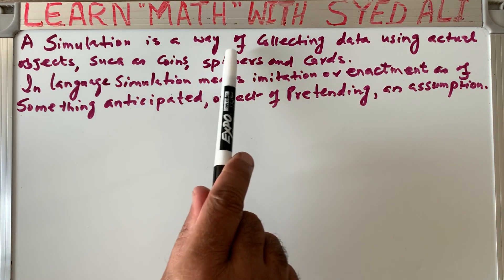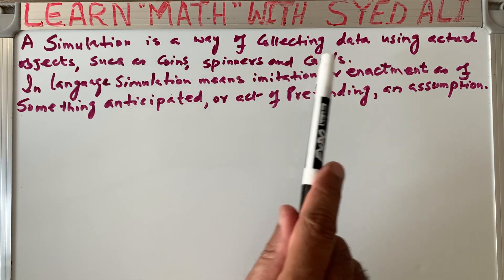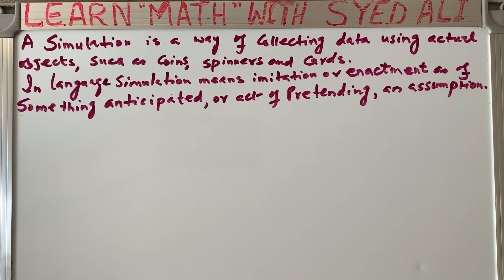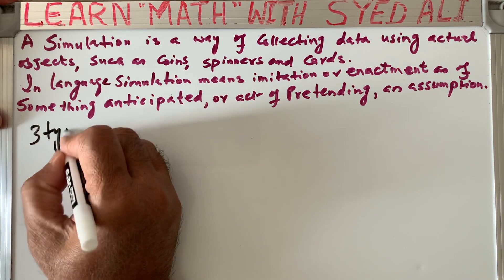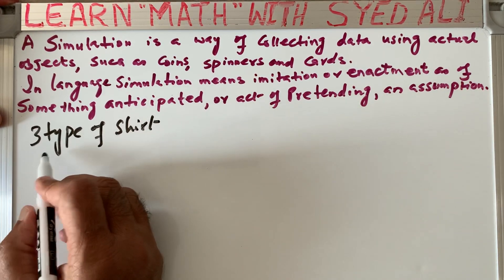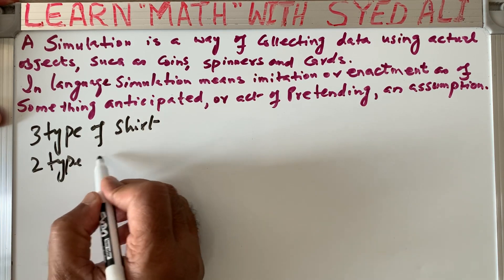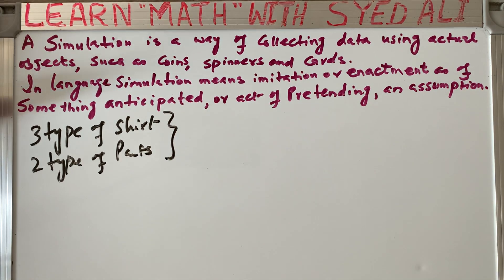So simulation is the way of collecting data using actual objects such as coin, spinners, or cards. In the last video, we had a customer coming in who has a choice of 3 types of shirts and 2 types of pants, and we saw that there were a total of 6 outcomes. Can we simulate that situation using a coin, spinner, or cards?